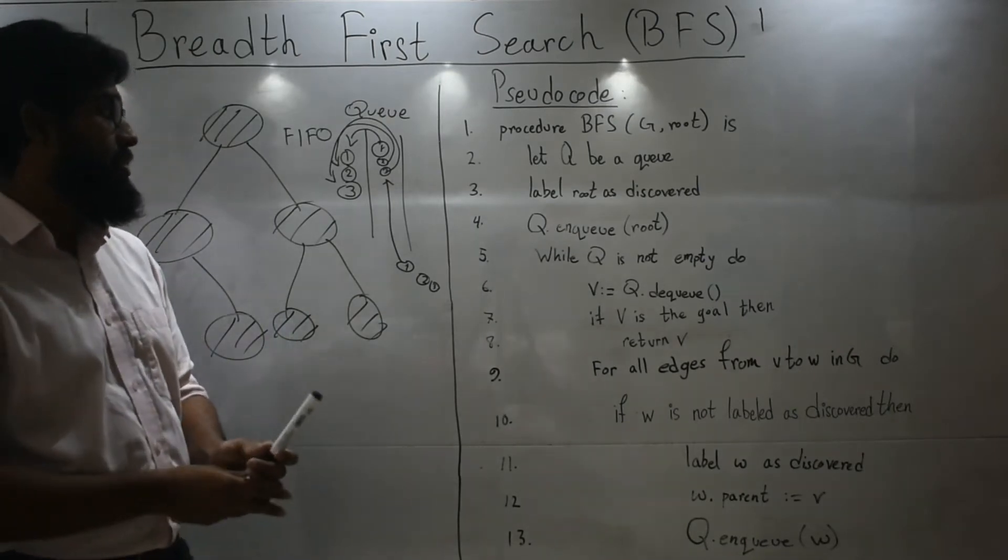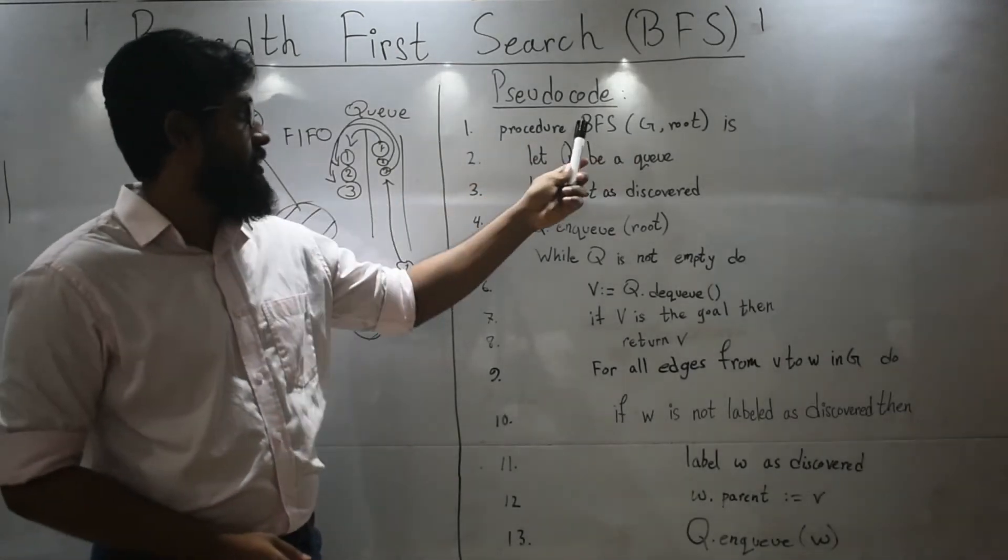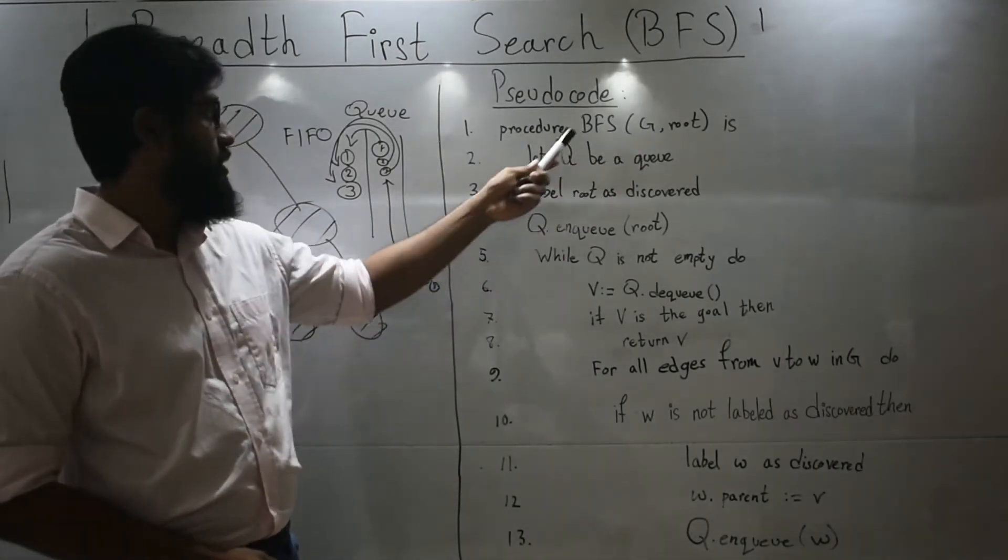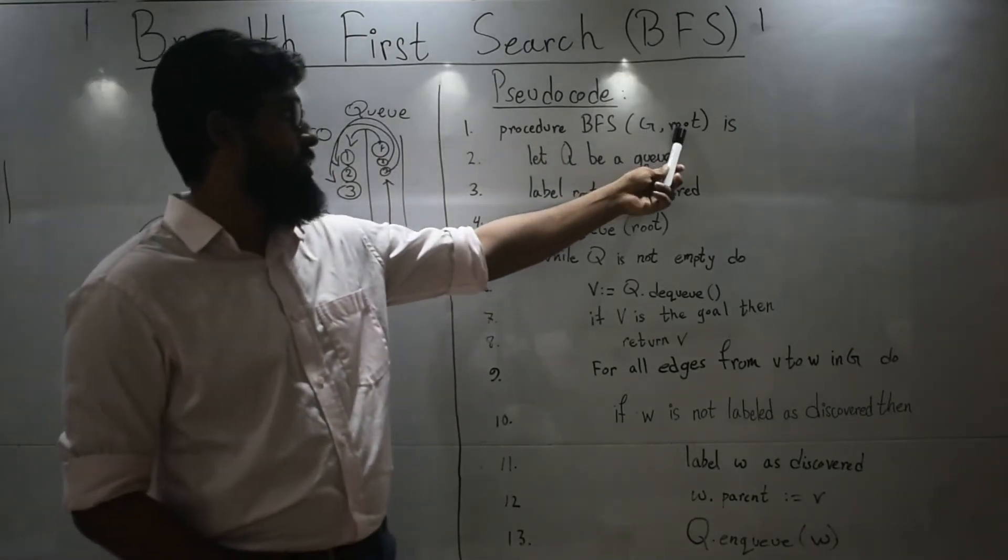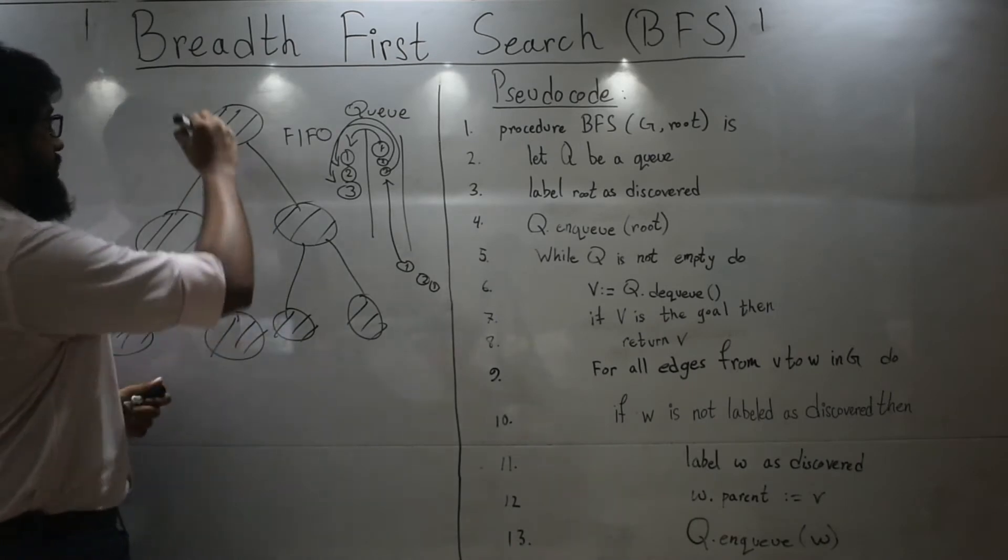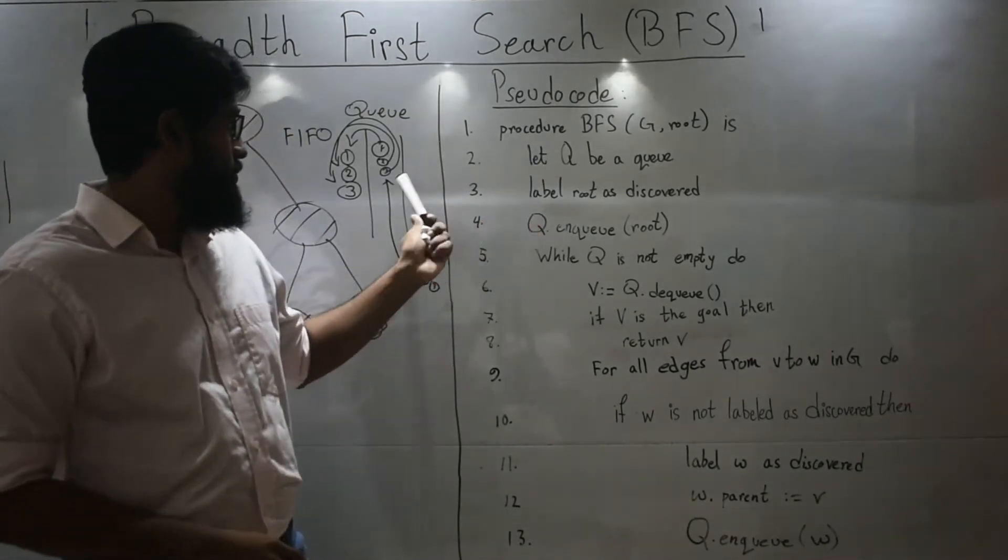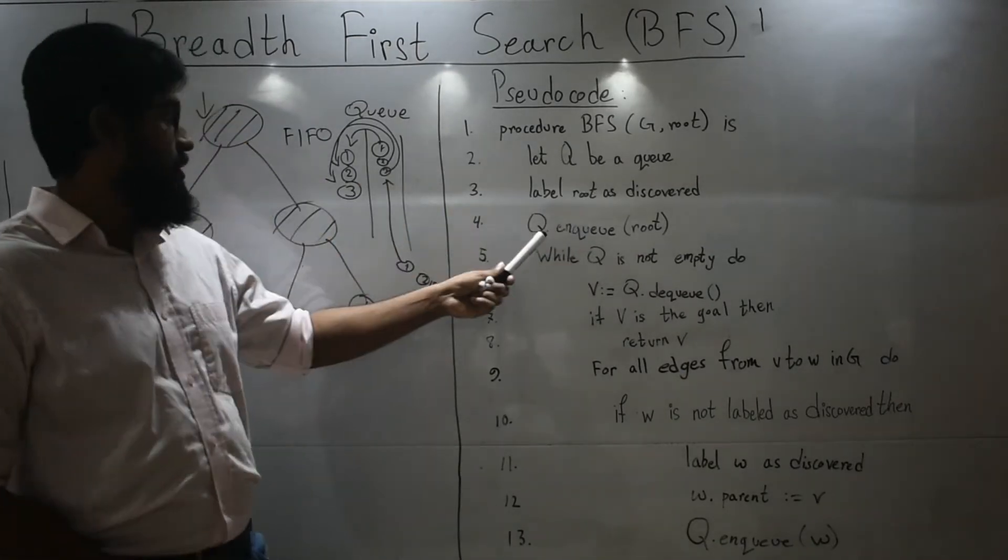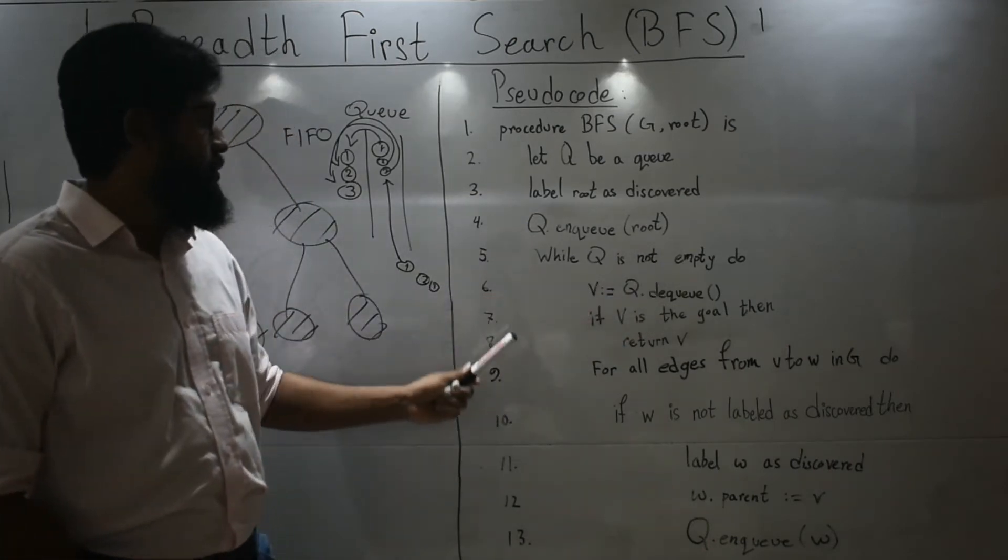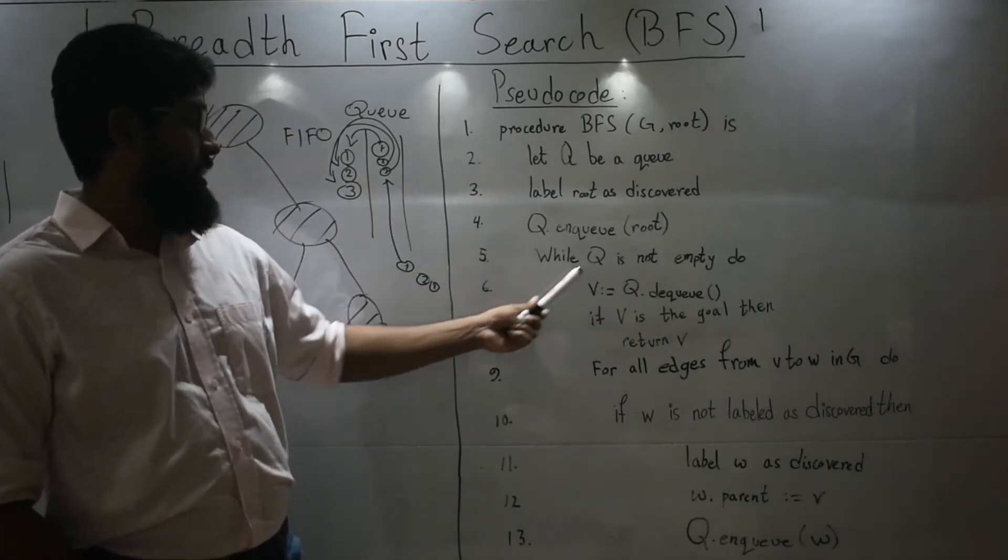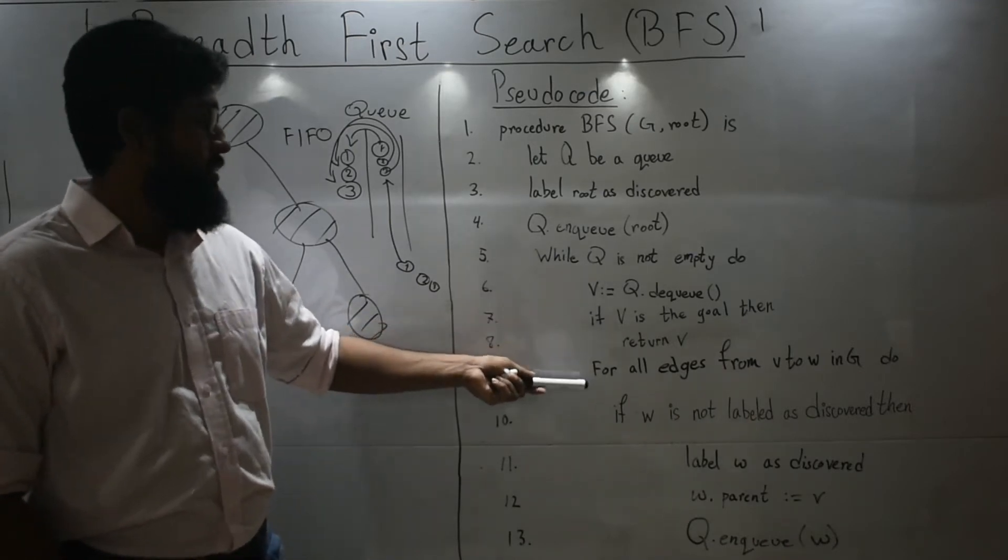Now let me just orient you with the pseudocode. Over here we are just calling the breadth-first search procedure. Here G denotes this graph or tree, the root denotes the starting point. Over here it's this one. Let there be queue, label the root as discovered, then enqueue the root while the queue is not empty, do a dequeue, if that's the goal node, then return that value. If not...